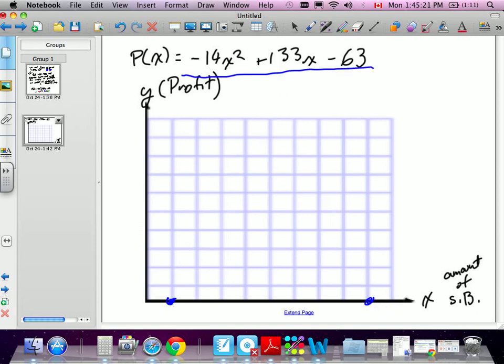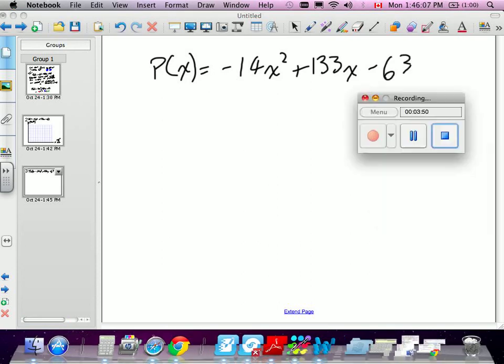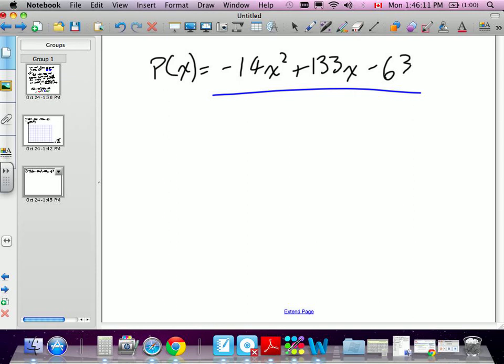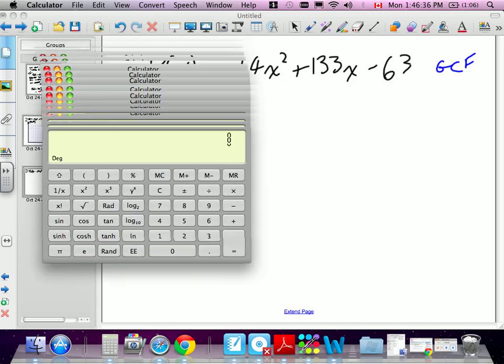So we take our equation, P(x) equals negative 14x squared plus 133x minus 63. In factoring, the first thing we do is we take out the greatest common factor. We're looking for a number that all three of these terms is divisible by. We'll quickly check 14. 133 divided by 14 doesn't work, not a whole number. I'm going to tell you that 7 is going to work, and 63 by 7 works.